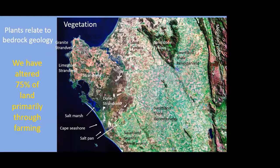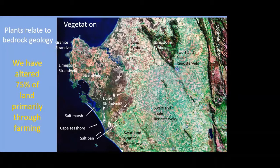In contrast, the sandstone fynbos in Picketberg and along the Cederberg Mountains has been relatively untouched because it's very difficult to farm there — poor soils, mountainous and rocky terrain. The point is it shouldn't surprise us that we have altered three quarters of ice-free land on Earth, primarily through farming — whether through plowing and growing crops or keeping herds of cattle or sheep. The impact of humans on the landscape has been very large, driven by the need to grow food. Plants relate to bedrock geology, and we can understand much of the original plant communities based on the underlying rocks.